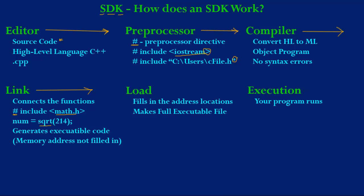So this is a six-step process: first is the editor, then the preprocessor, then the compiler, then the linker, the loader, and finally execution. And in my next video, I'm going to apply these processes to program development. We're going to revisit that first program that we wrote in my video 'My First C++ Program' and take a look at how these processes affect program development. So I really encourage you to watch the second video, and I hope that you really enjoyed this video.